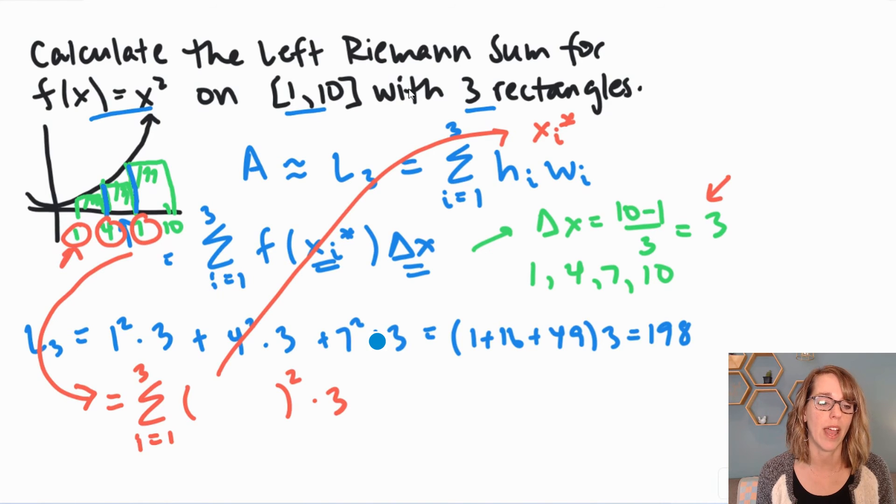To get to 1, I'm going to start at 1 and I'm going to add none of my delta x's. To get to 4, I'm going to start at 1 and I'm going to add a single delta x. And then to get to 7, I'm going to add two of my delta x's, two delta x's.